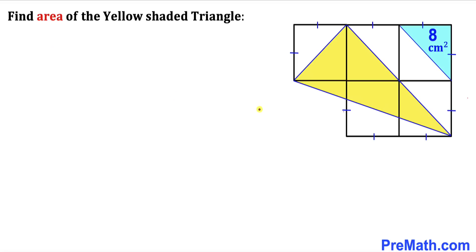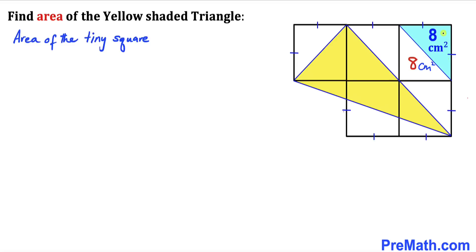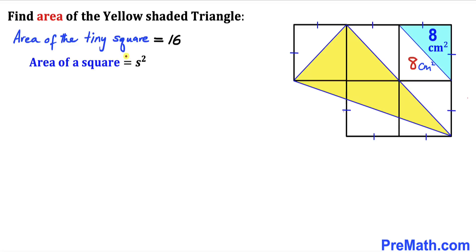The area given for this blue shaded region is 8 centimeters square. Since we are dealing with a square, the other half is also 8 centimeters square. Therefore the total area for this tiny square is 8 plus 8, which equals 16 centimeters square. Recalling the area of a square formula: area equals s squared, where s is the side length, we have s squared equals 16.